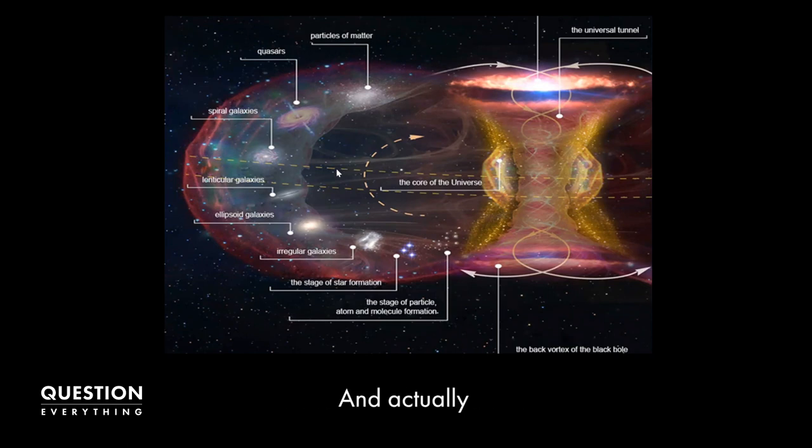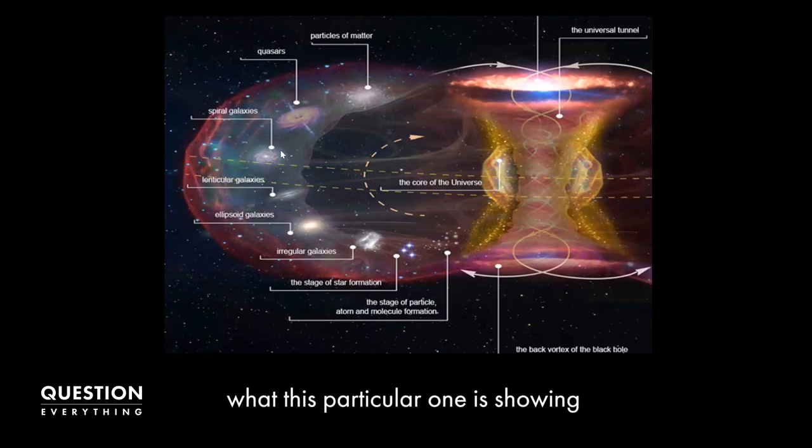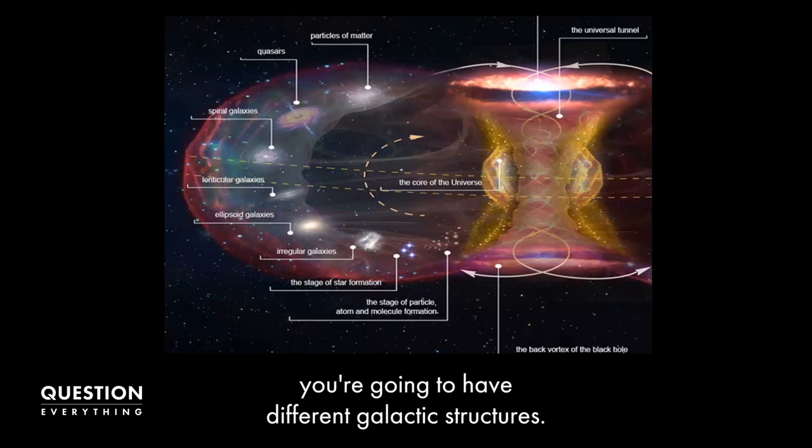and actually what this particular one is showing is that at different stages along the torus, you're going to have different galactic structures.